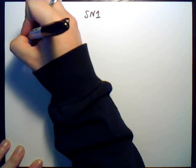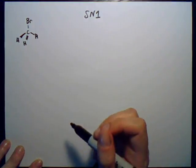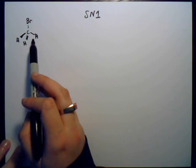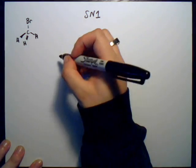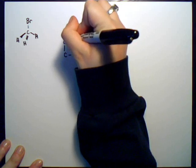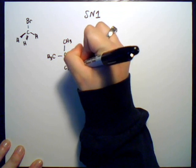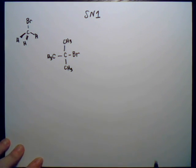Methyl bromide has a central carbon with hydrogens attached. Tert-butyl bromide has the same basic structure except all those hydrogens are replaced with methyl groups instead. So tert-butyl bromide is going to look like that — a central carbon bonded to three methyl groups and one bromine.